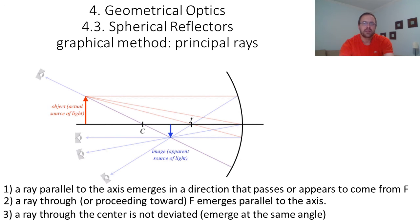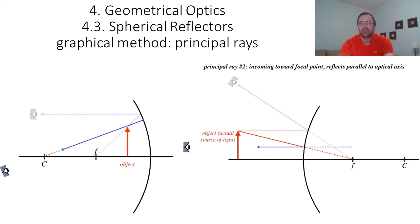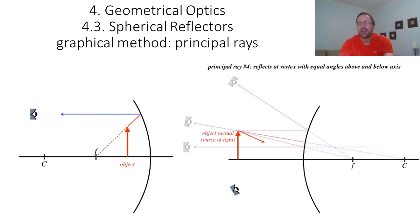The LibreTexts gives you several examples for how to use the graphical method, and I recommend you go through them slowly to get familiar with this method. It works both for concave and convex mirrors, and we will see a very similar method for lenses.